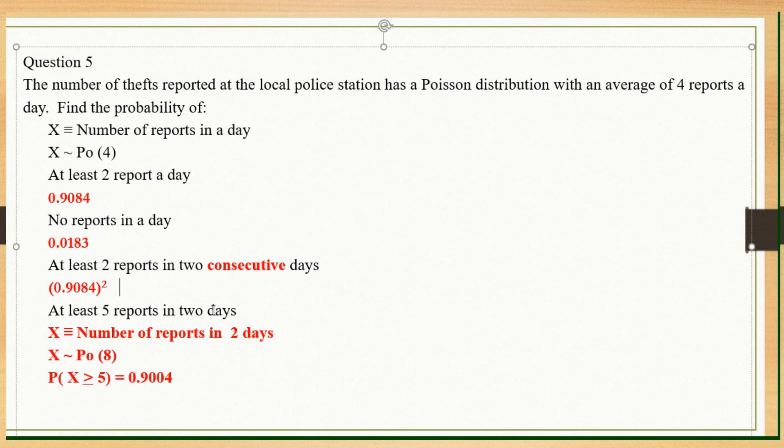At least 5 reports in 2 days. Now this one, the word consecutive is not there. Therefore, you have to change the numbers with lambda. So you rewrite your event: number of reports in 2 days. The Poisson now will be 8 because initially in a day was 4. Now it will be 8 because 2 days. Then you find at least 5 reports. You should be able to get the answer.